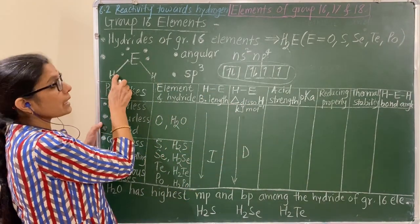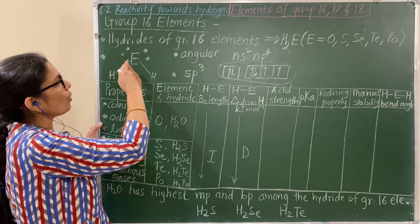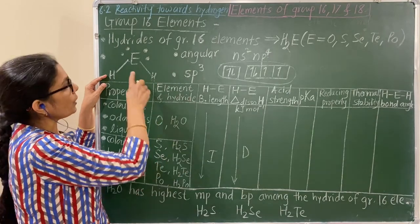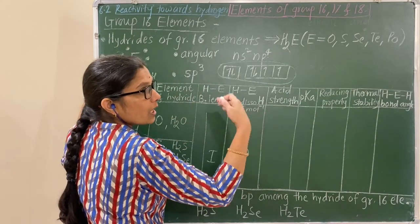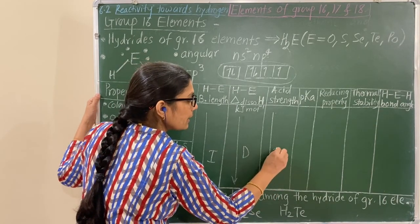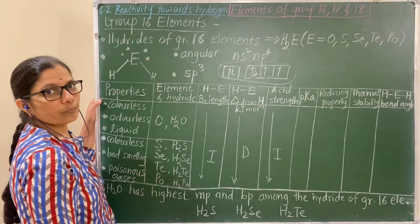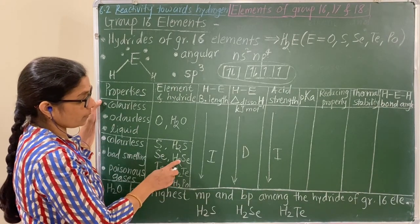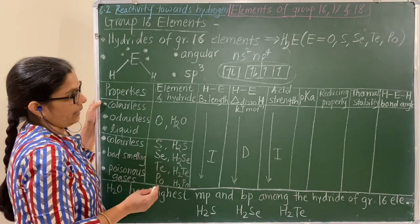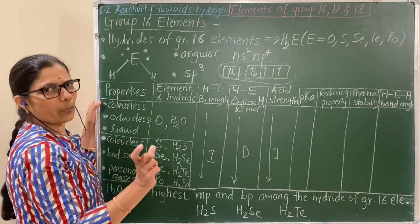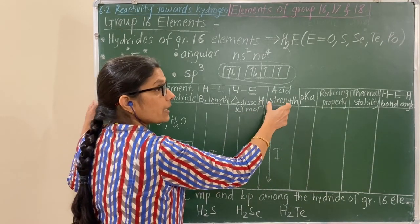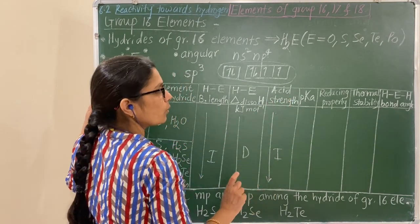As this bond breaks easily — meaning less energy is required — when dissolved in water, it gives H+ ions easily. Therefore, acid strength increases down the group. All these hydrides are very weak acids, but their acid strength increases down the group because bond dissociation enthalpy decreases.